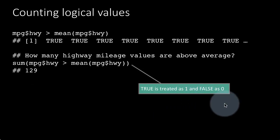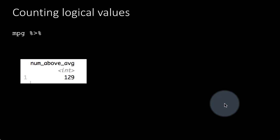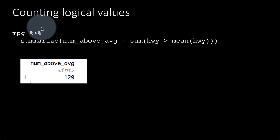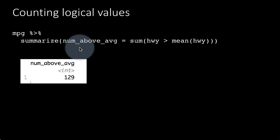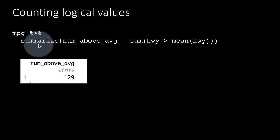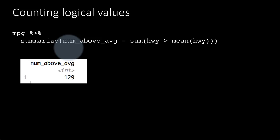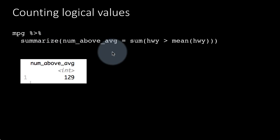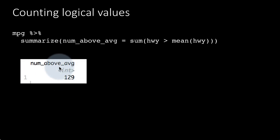We can do the same thing with pipes: mpg %>% summarize(num_above_average = sum(hwy > mean(hwy))). Because we are using an aggregate function and did not do any grouping, the summarization works on the complete data set and returns a single number as a one-row, one-column table.